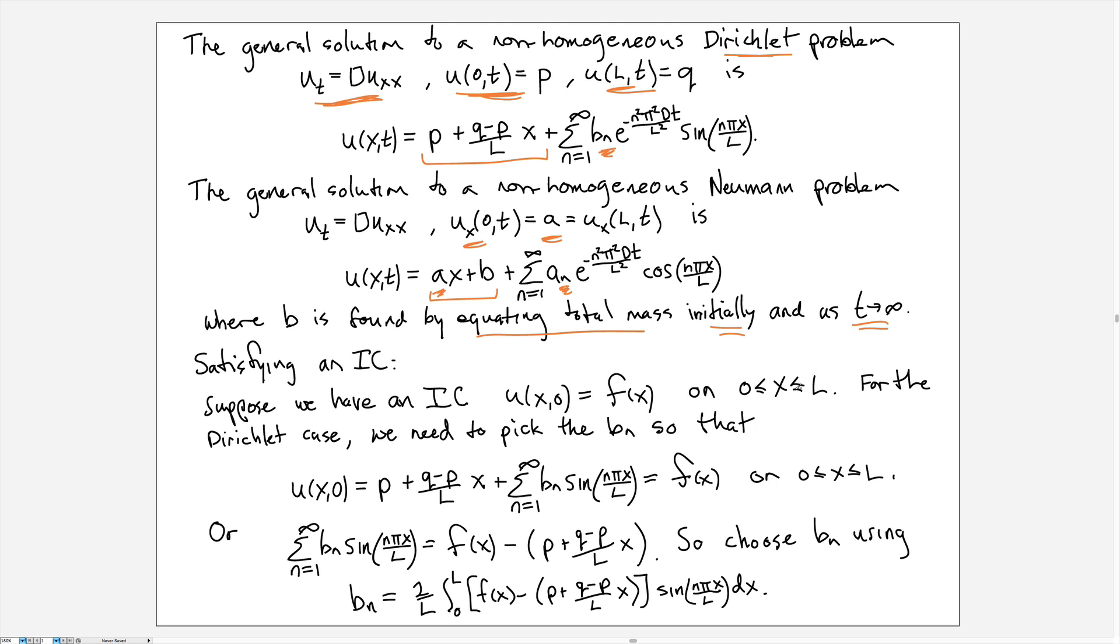How do we satisfy the initial condition? Suppose we have an initial condition like u at t = 0 is given by some function f(x) on 0 to L. For the Dirichlet case, we need to pick the b_n values here so that when we plug in u(x, 0), we get rid of the exponential term, that becomes 1, and I now have this full expression here that has to be satisfied.